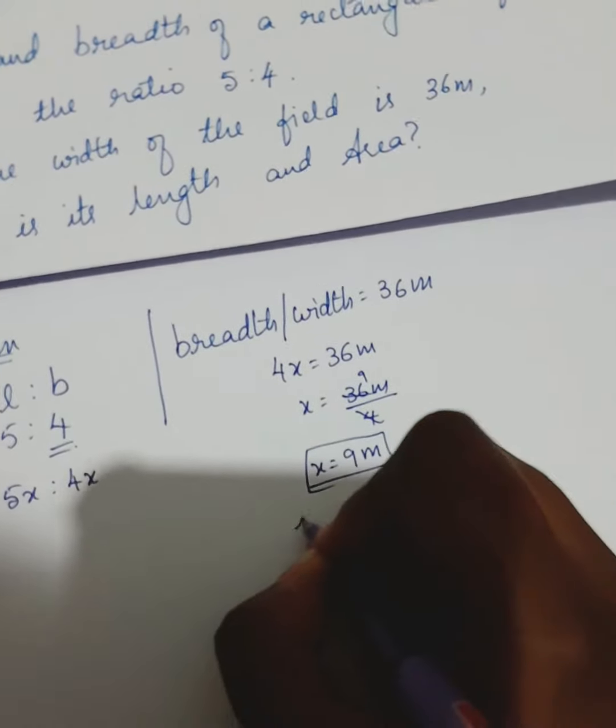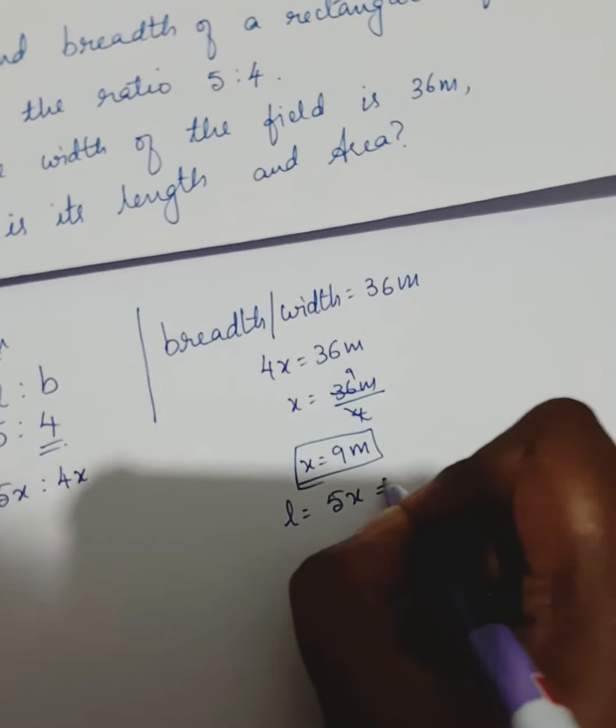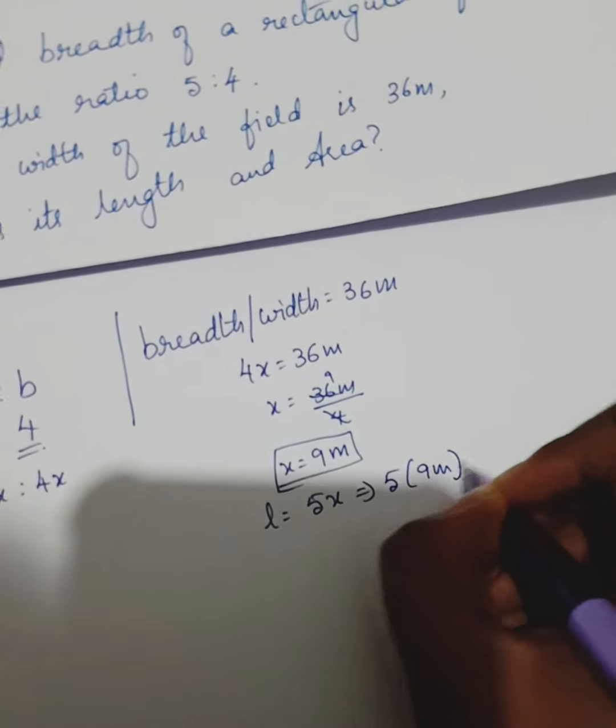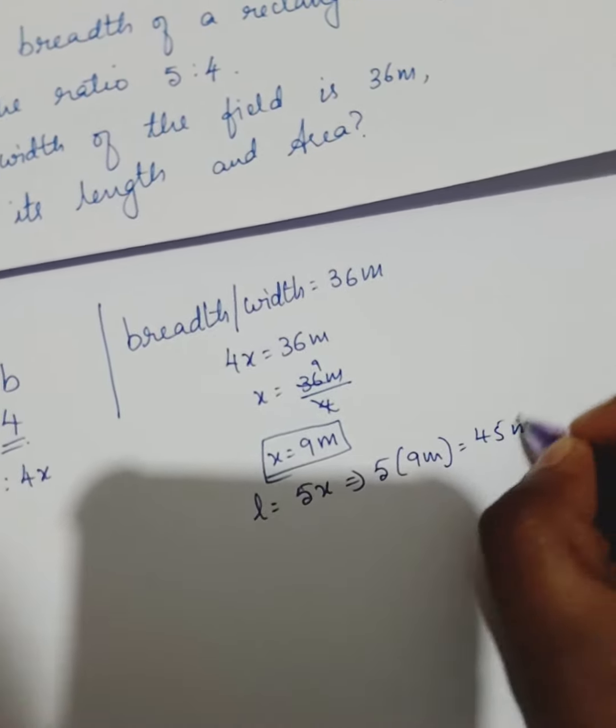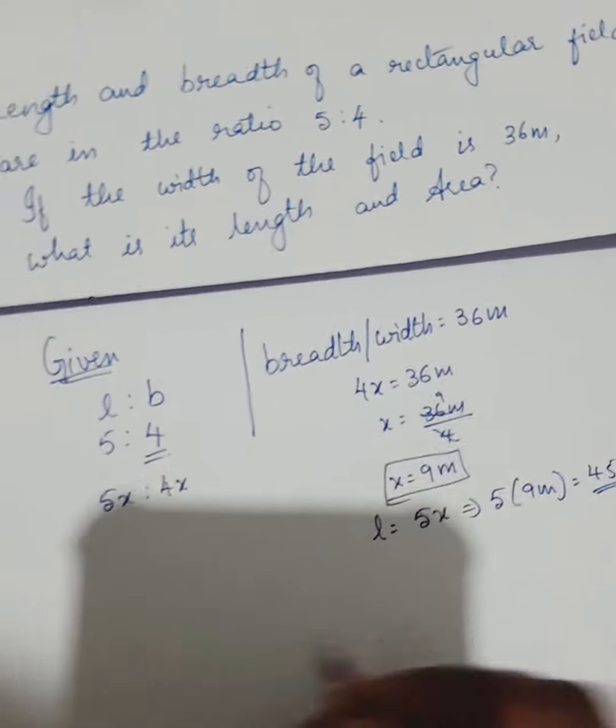If x is 9, length is 5x which is 5 into 9 meter that is 45 meter. Now, this is my length and this is my breadth. Now, let us find out the area.